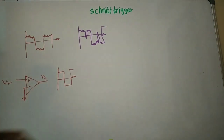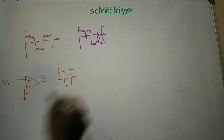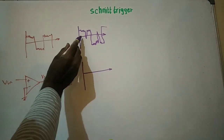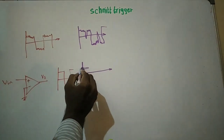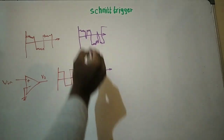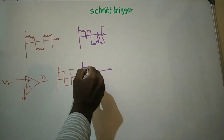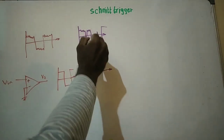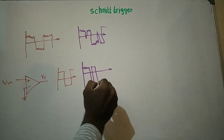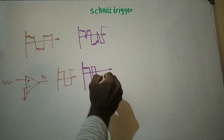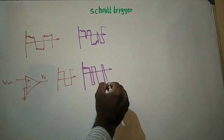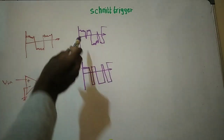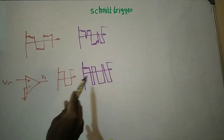If I pass this signal into an op-amp, the output waveform will be completely distorted. Here it is positive, higher than the zero level, so you will get one. Since the noise crosses the zero level at this particular point, the signal goes to minus Vsat. Then it goes positive again, then negative, crossing zero again, going positive and coming back negative. So this signal is completely distorted and the output waveform is not clean.